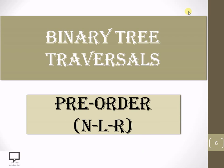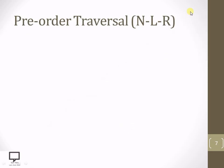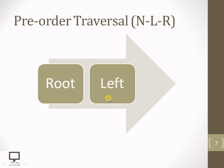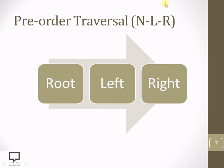Now let's start with the heart of this video session. Pre-order traversal is a binary tree traversal technique where we follow the sequence N, L, R. Here N stands for the root node, which we process first, L stands for the left subtree or left child, and R stands for the right subtree or right child. So this is the sequence we are supposed to follow for pre-order traversal.